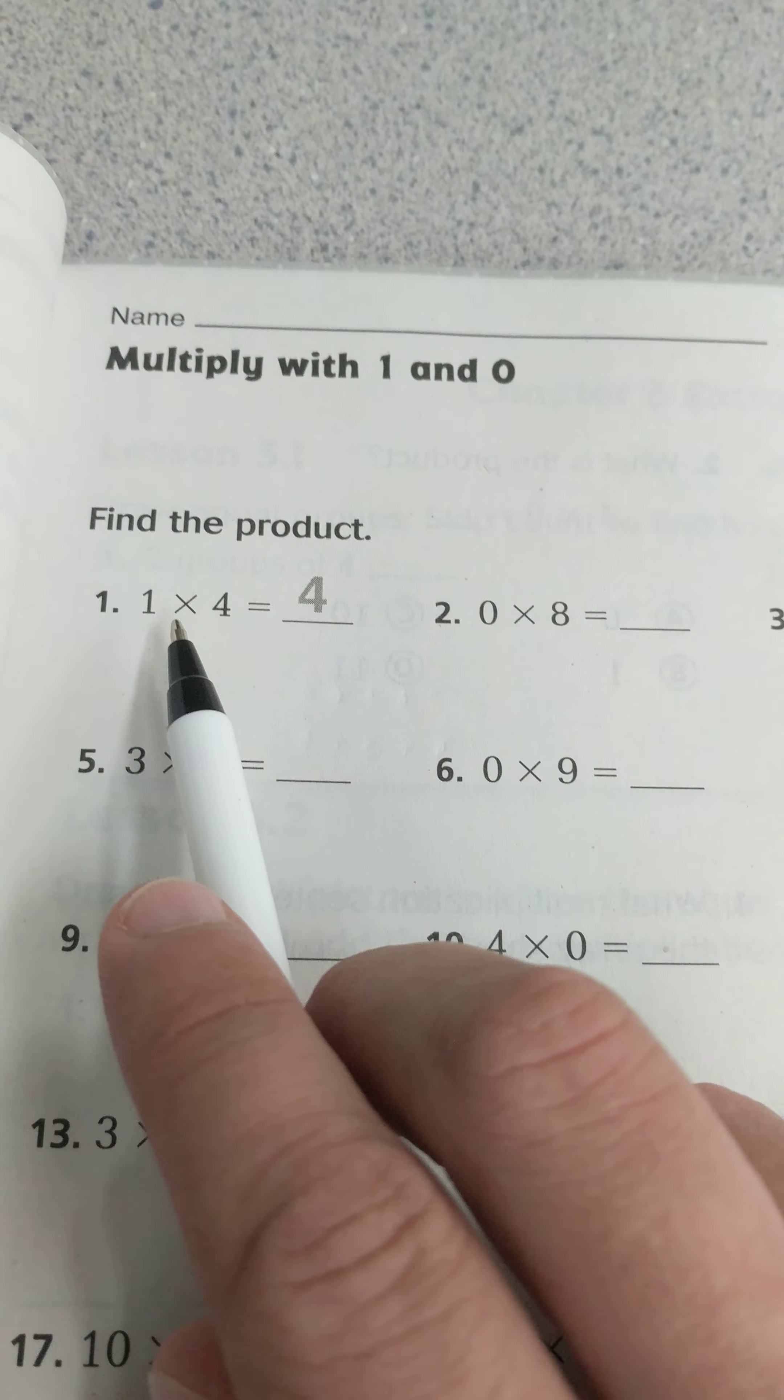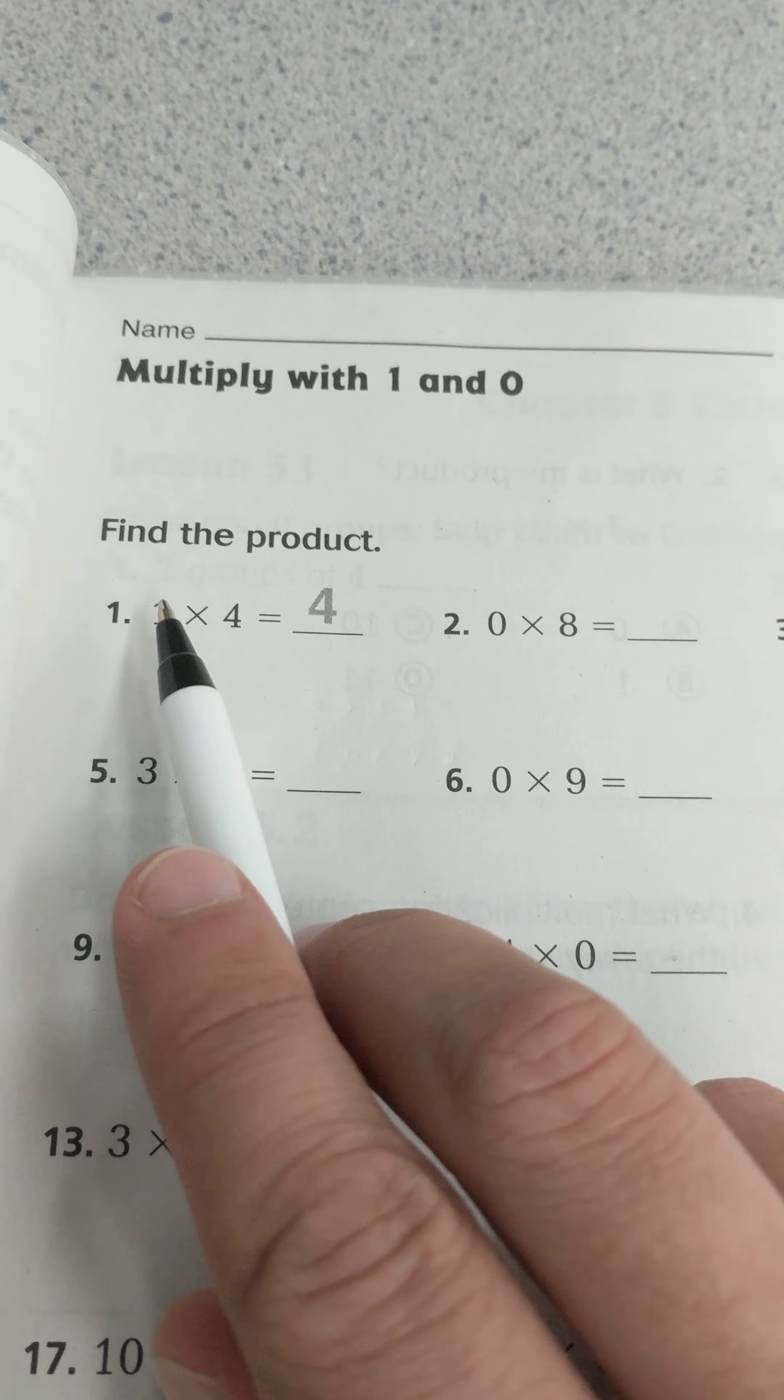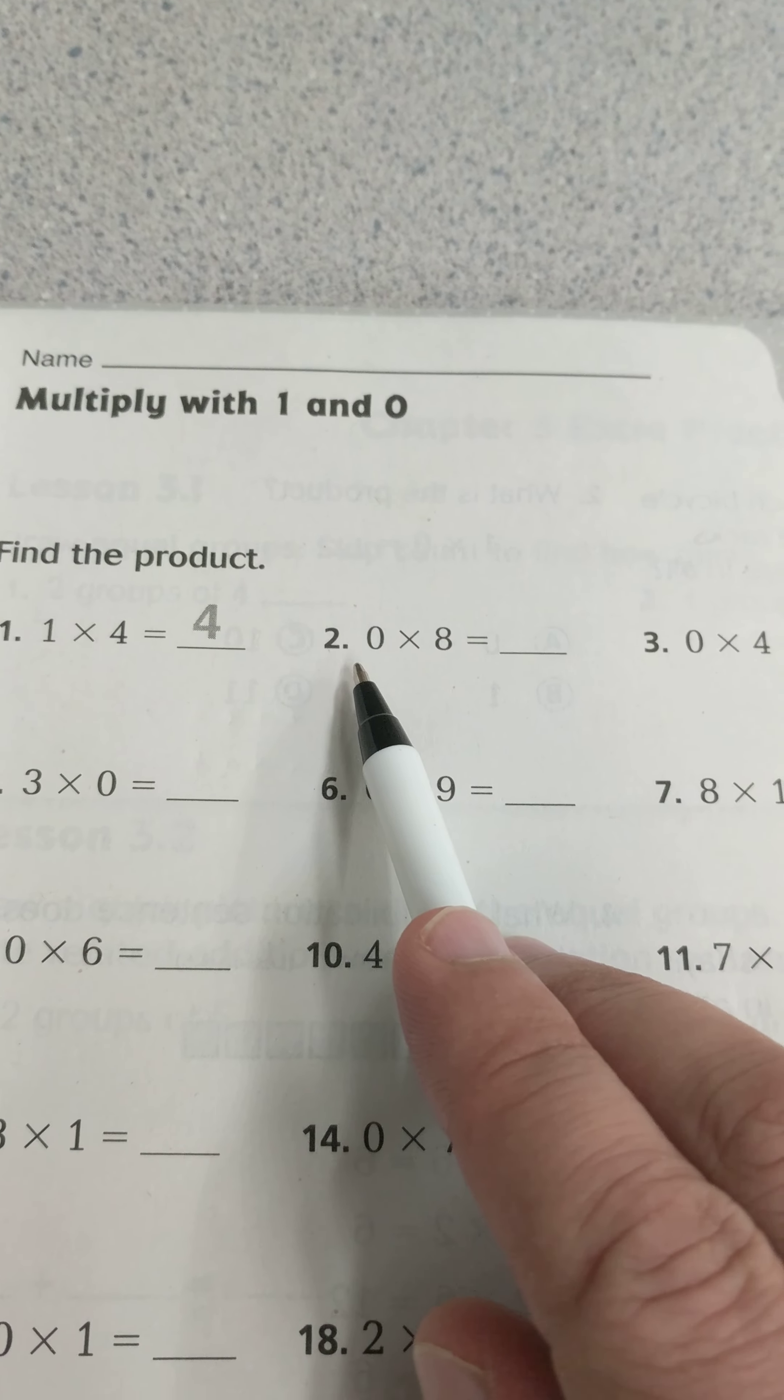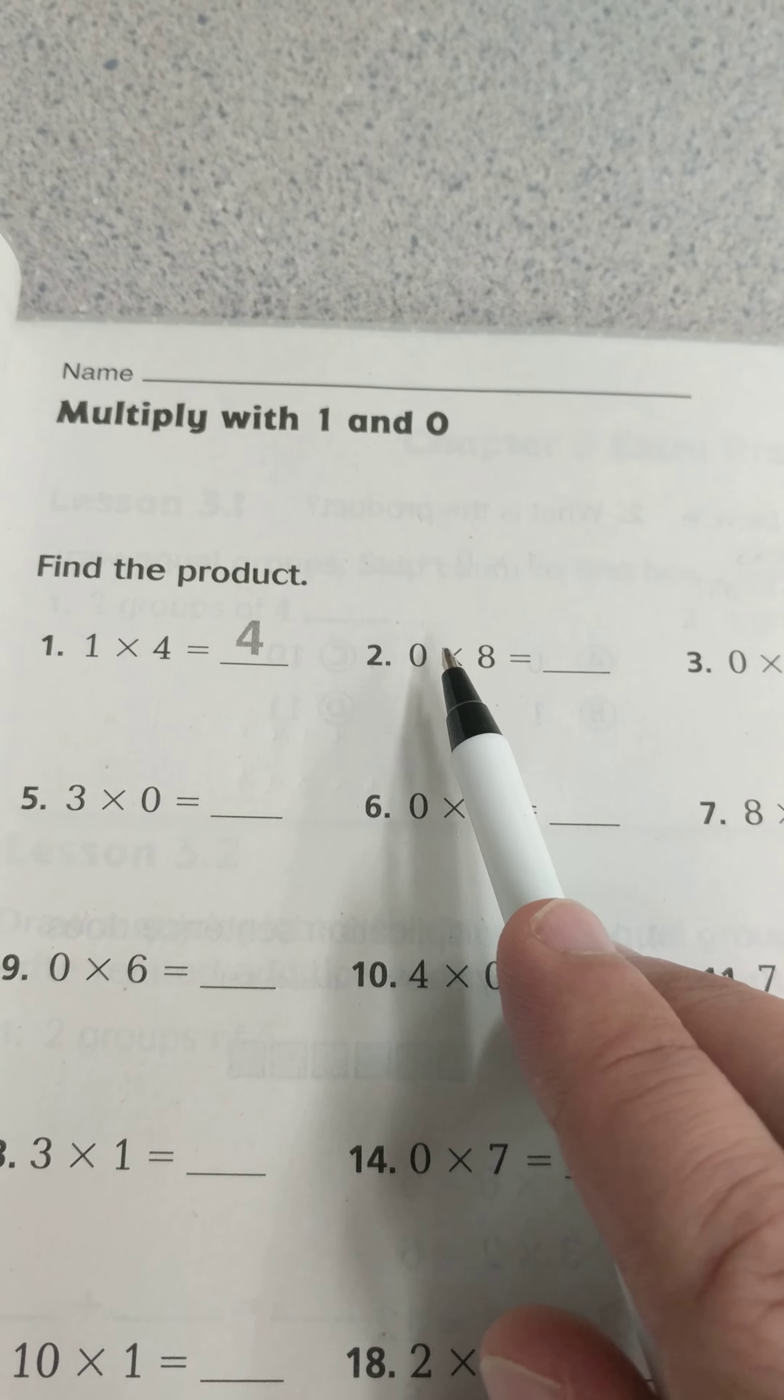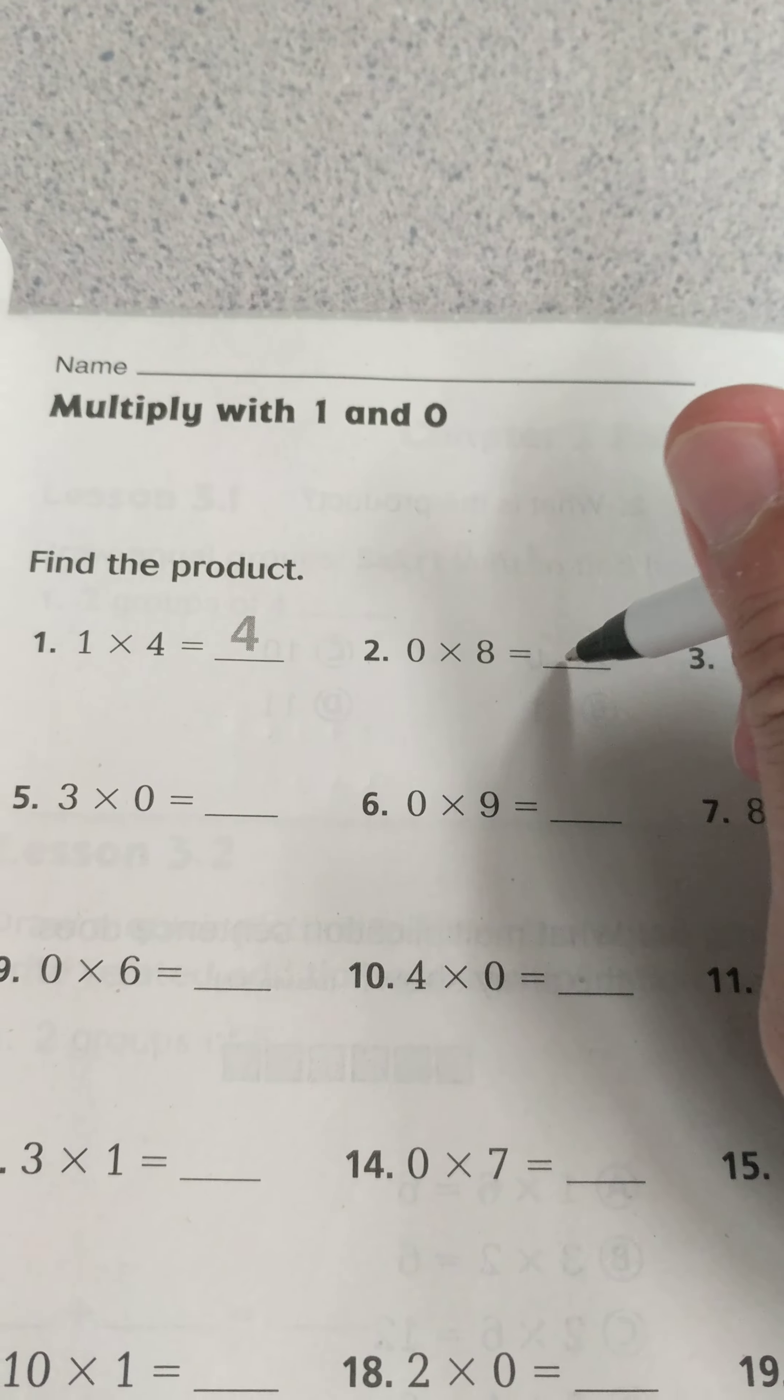The two factors are 1 and 4, so it just means it's 4 one time, so it'll be 4. When we multiply by 0, it means we're multiplying that number 0 times. That number is happening 0 times, so if something doesn't happen, it's still 0.